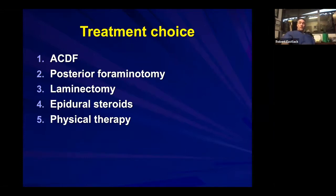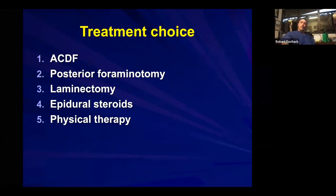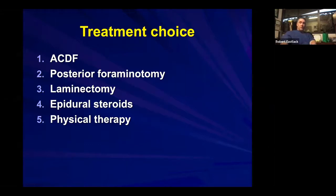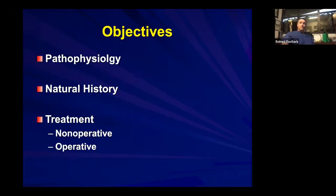Weakness always concerns us, but certainly two weeks doesn't have to be the only path — a lot of these things get better. If you're forced from a progressive neurologic deficit perspective to deal with it surgically, you can consider things like ACDF, which we'll discuss more in depth, posterior foraminotomies, historically laminectomies and fusions, and then epidurals and physical therapy to temporize.